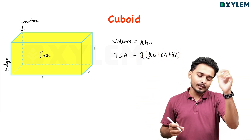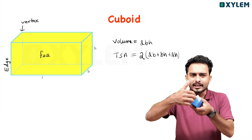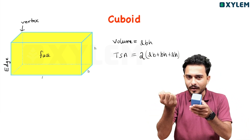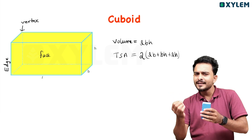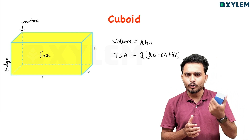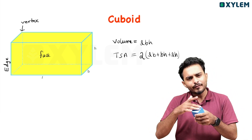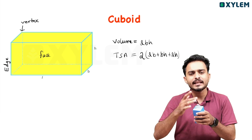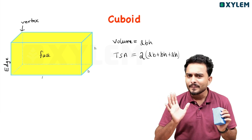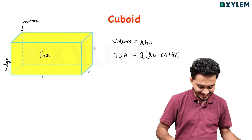If the cuboid has one face open, you have to consider the total surface area accordingly. If you have a face open, you subtract that face from the total. Clear — that is the concept of open face.